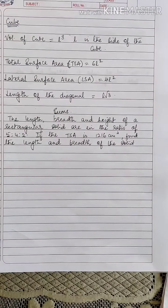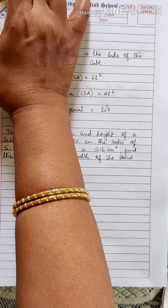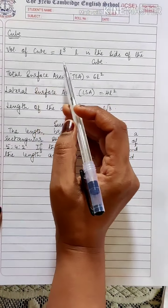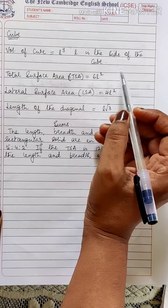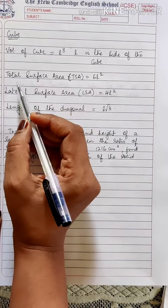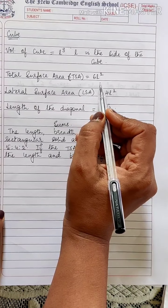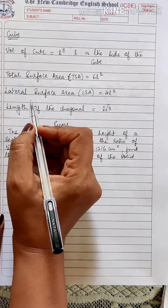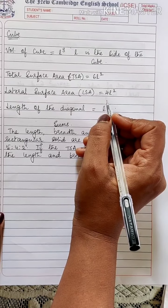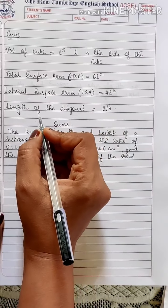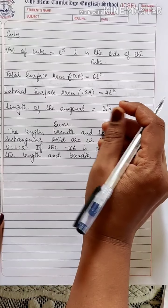For a cube: volume is given by L³ where L is the side of the cube. Total surface area (TSA) is given by 6L², lateral surface area (LSA) is given by 4L², and the length of the diagonal of a cube is given by L√3.